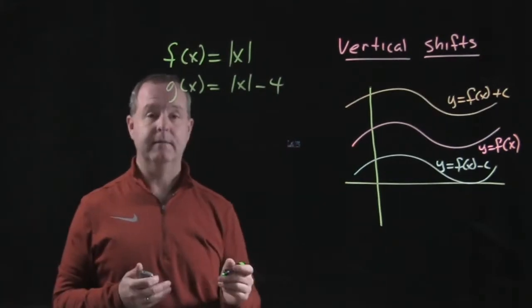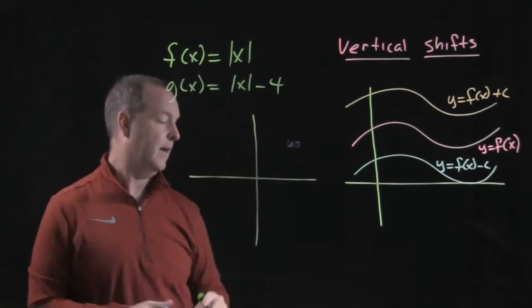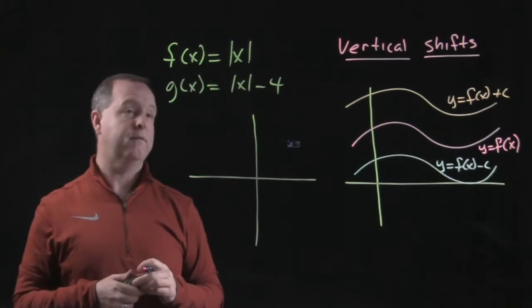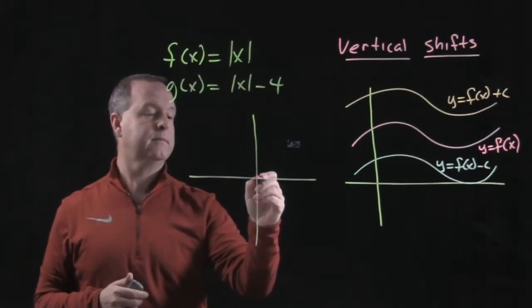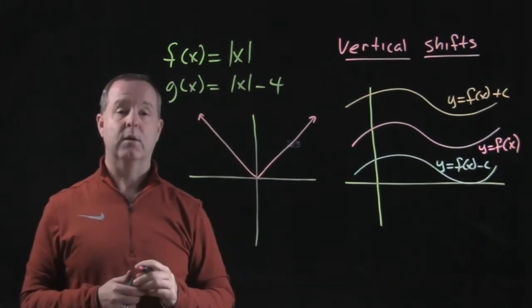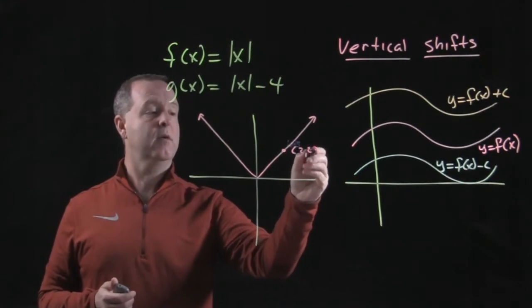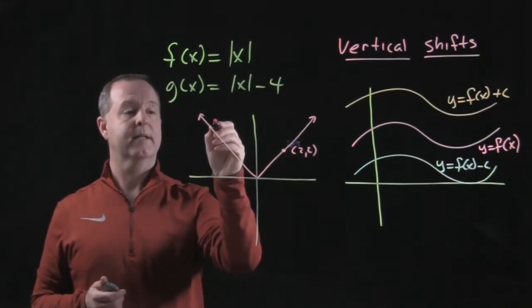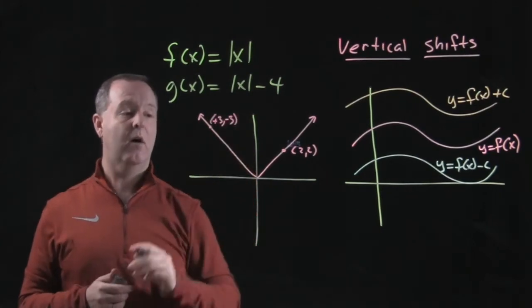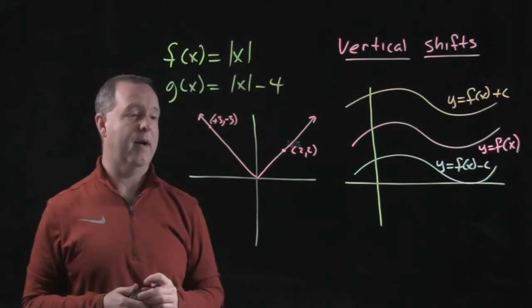So let's go ahead and graph f of x. It's one of the foundational functions that we have. So we have some points on there. For example, we know the point 2 and 2 would be on it. The point positive 3 and negative 3 are on it. We know it's an even function because it's symmetrical about the y-axis.